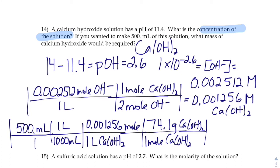And then it's just a little bit of number crunching. 0.0465 grams of calcium hydroxide. That's what we'd have to put in to 500 milliliters if you wanted the pH to be 11.4.